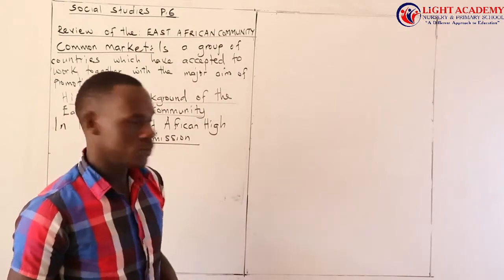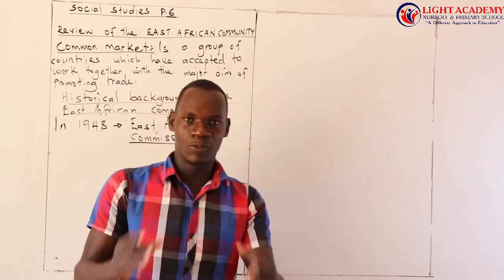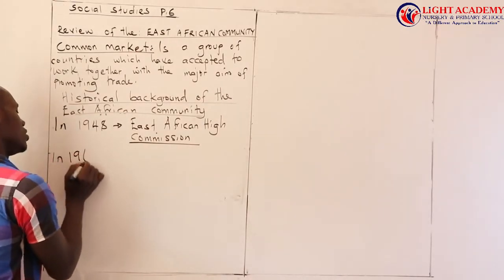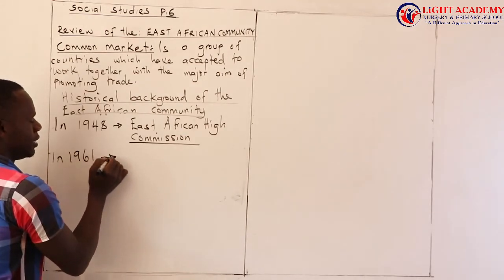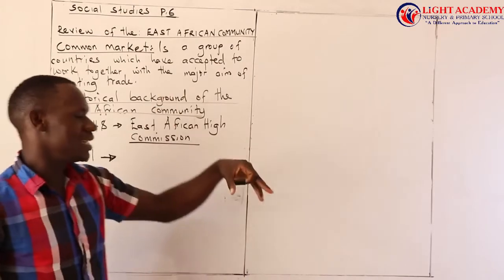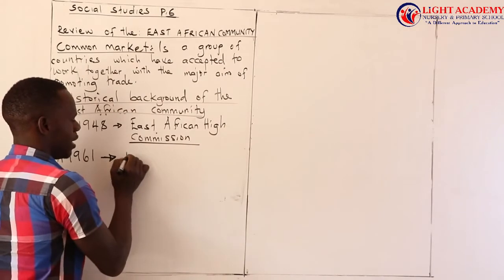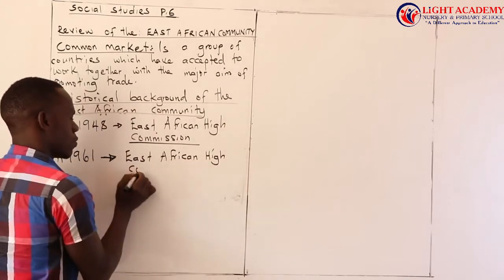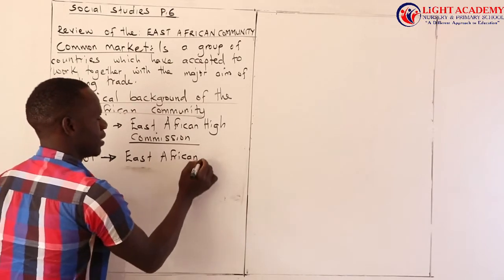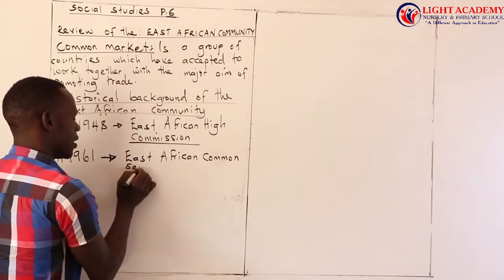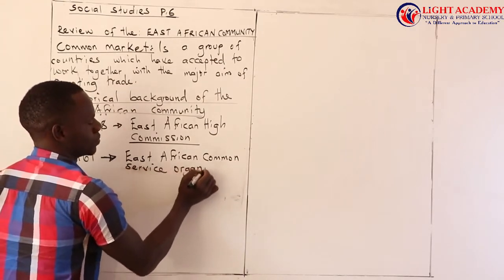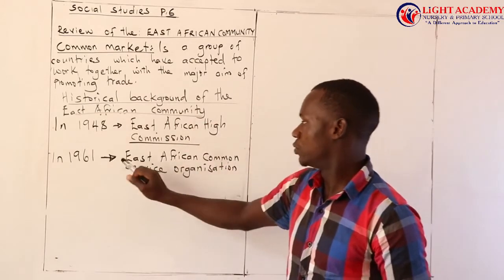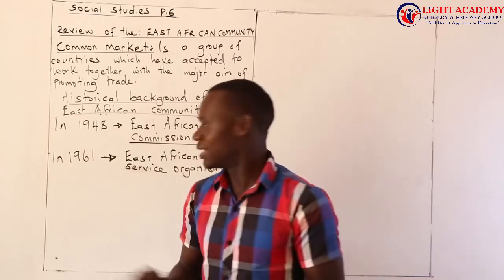How did it change? When Tanzania was about to get independence, Tanzania withdrew. And when it withdrew, that was by 1961. Tanzania was just getting ready to get her independence. It changed its name from the East African High Commission to the East African Common Service Organization in 1961.